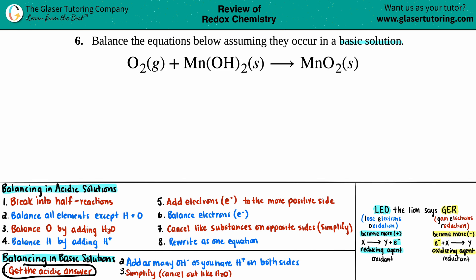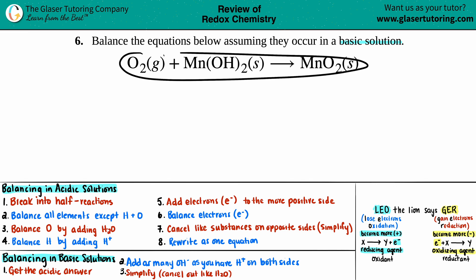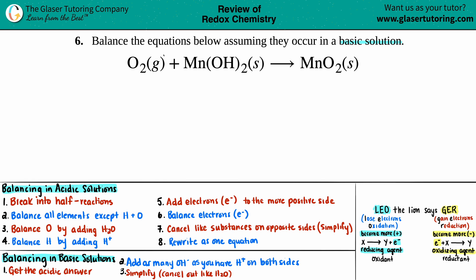The first part is to get the acidic answer. That's why when I see 'basic solution' I start to tick a little bit, because we always have to go back to the acidic solution first. So let's find out what the acidic solution answer is. We're going back to these eight steps. Step one: we just have to break the half-reactions into two.